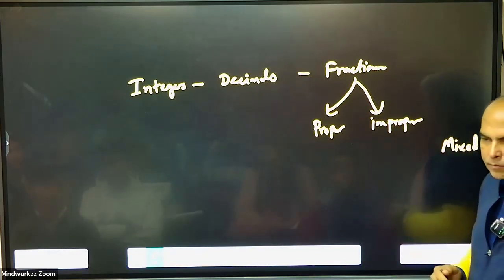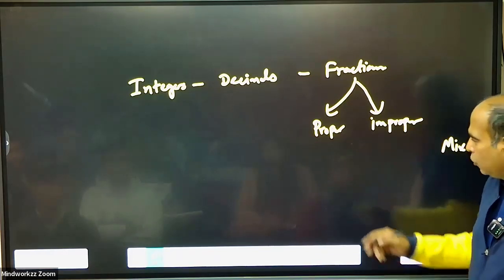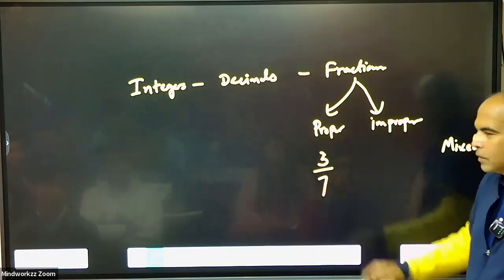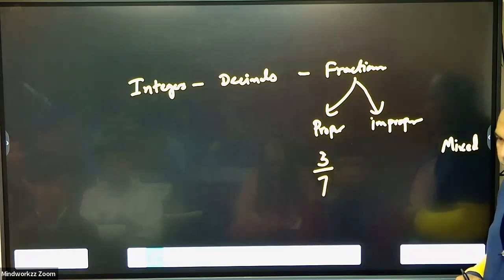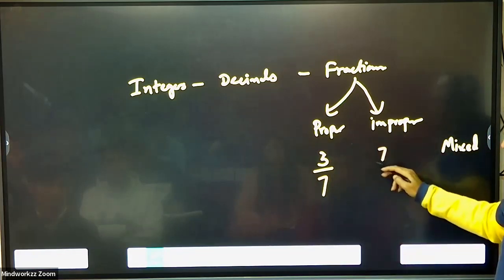You know these three? What are they? When the numerator is smaller than the denominator, 3 by 7 is a proper fraction. When the numerator is bigger than the denominator, 7 by 3 is an improper fraction.